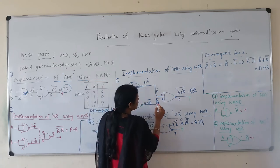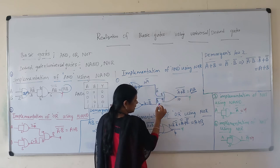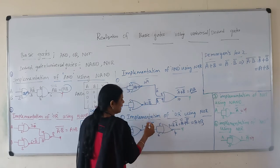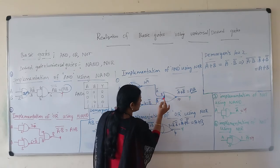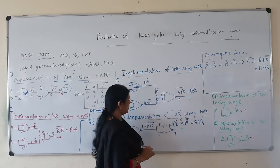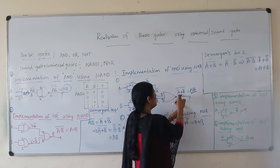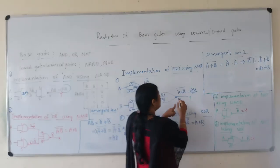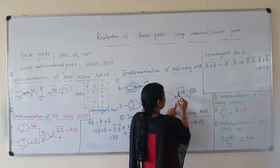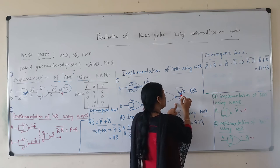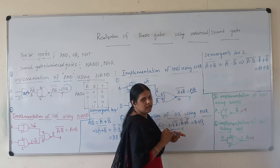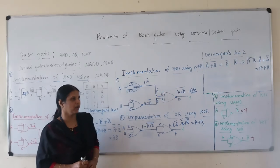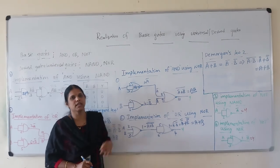Now, giving A bar and B bar as inputs to the next NOR gate combination: from the first pin I connect to the eighth pin, and from the fourth pin I connect to the ninth pin. Then from the tenth pin of the IC, I get A bar plus B bar whole bar, because NOR stands for NOT OR. Once again applying De Morgan's law, we get A double bar dot B double bar, which equals AB. This is how you derive the AND gate using NOR gate. I hope you have understood how to derive the AND gate using both NAND and NOR.